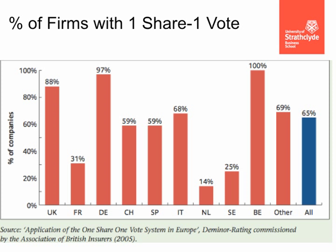In Belgium, for example, 100% of companies have one share one vote, but if you look at the Netherlands only 14% of companies have a one share one vote system. The countries shown along the bottom are UK, France, Germany, Switzerland, Spain, Italy, Netherlands, Sweden, Belgium, and other — note that CH is Switzerland, not China. The variety across Europe is really quite striking.